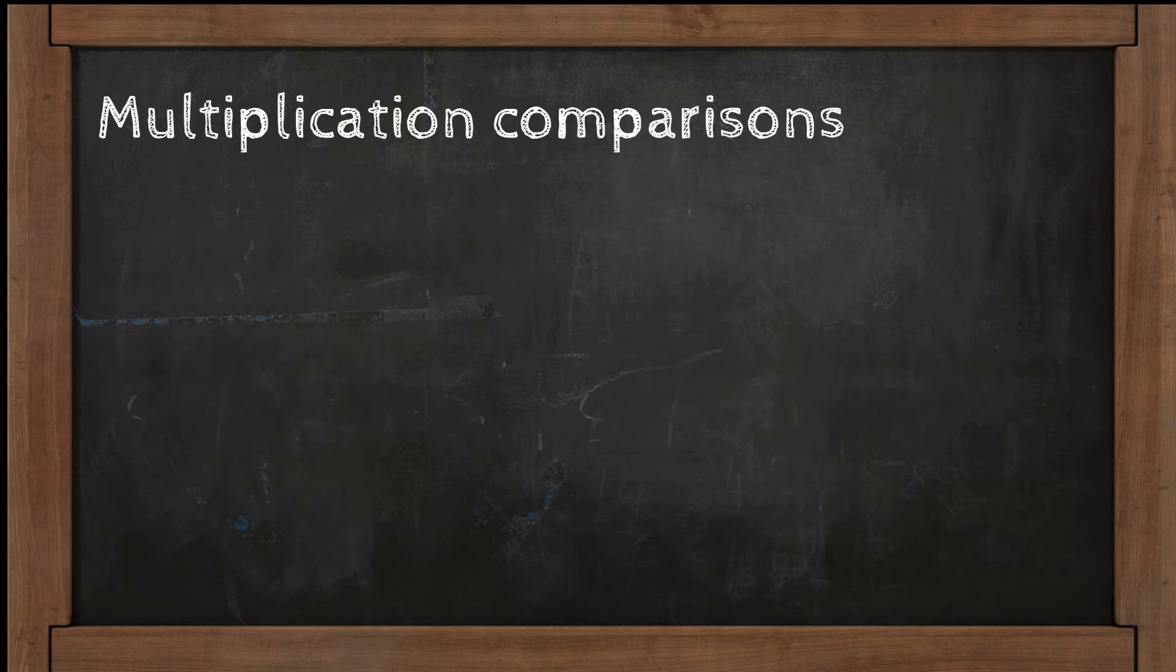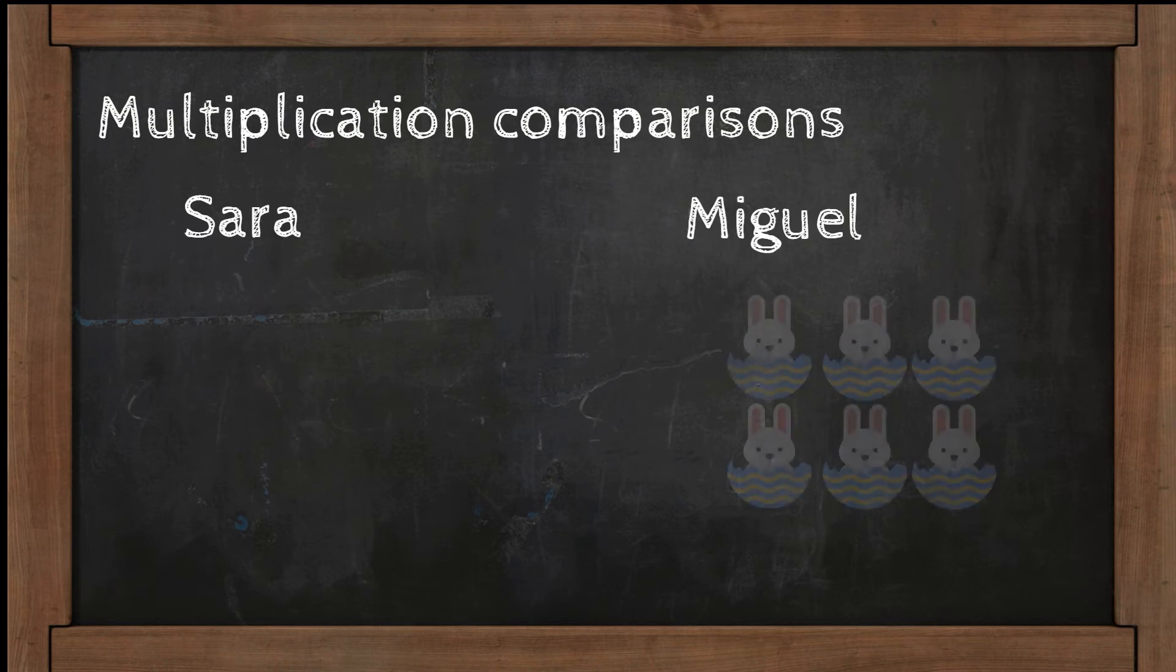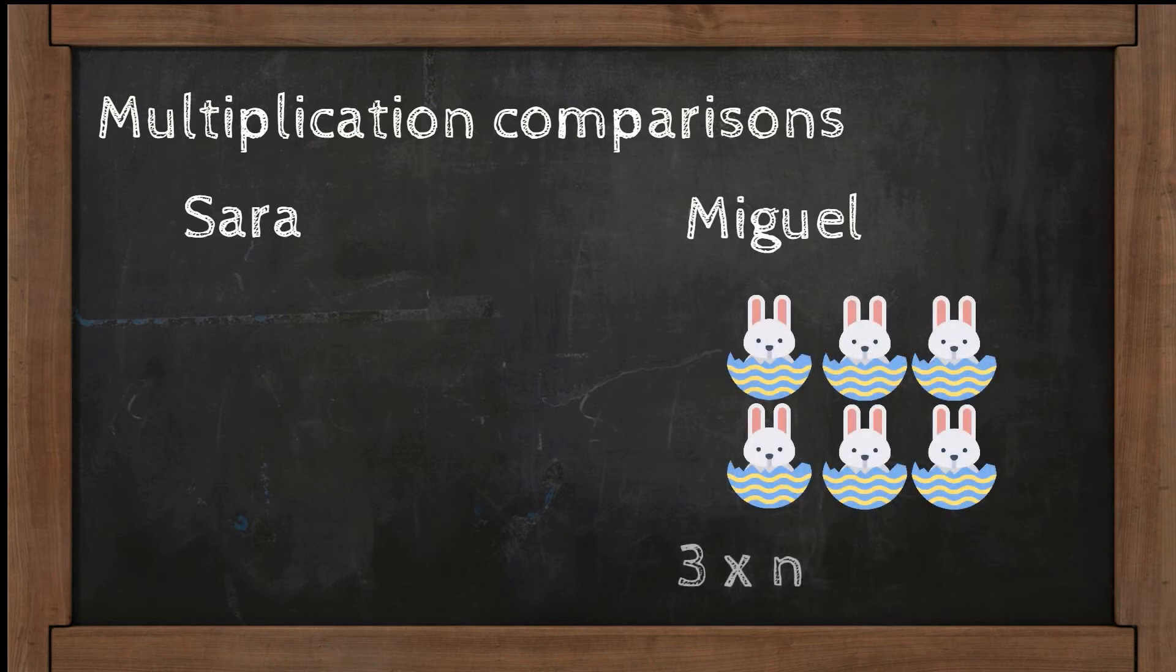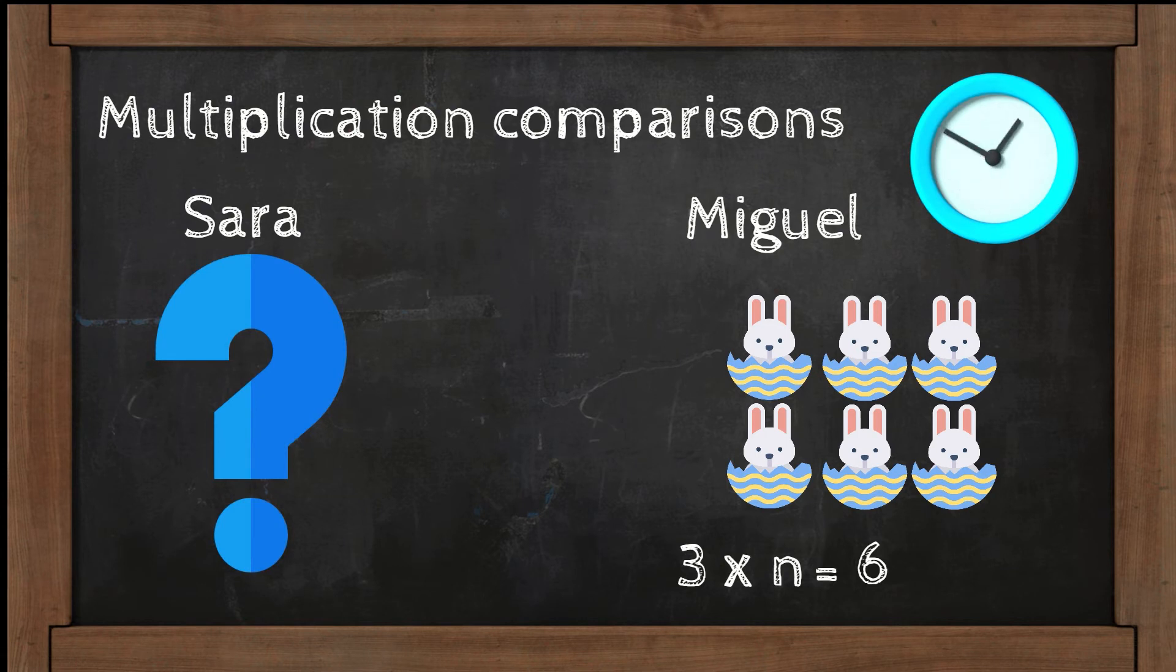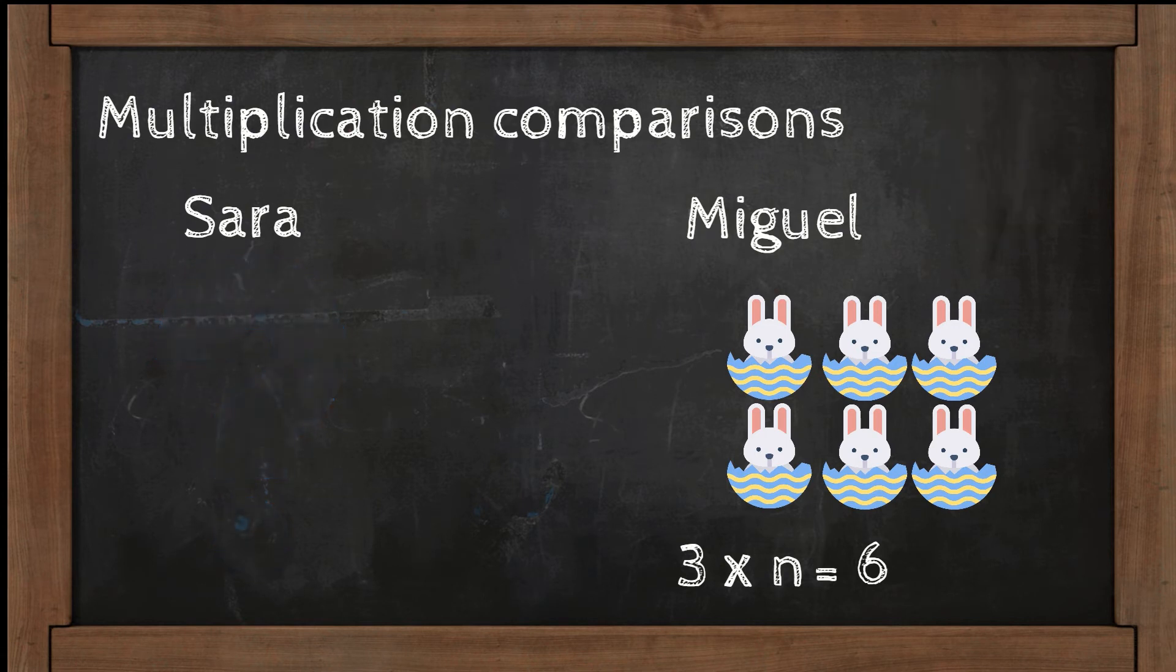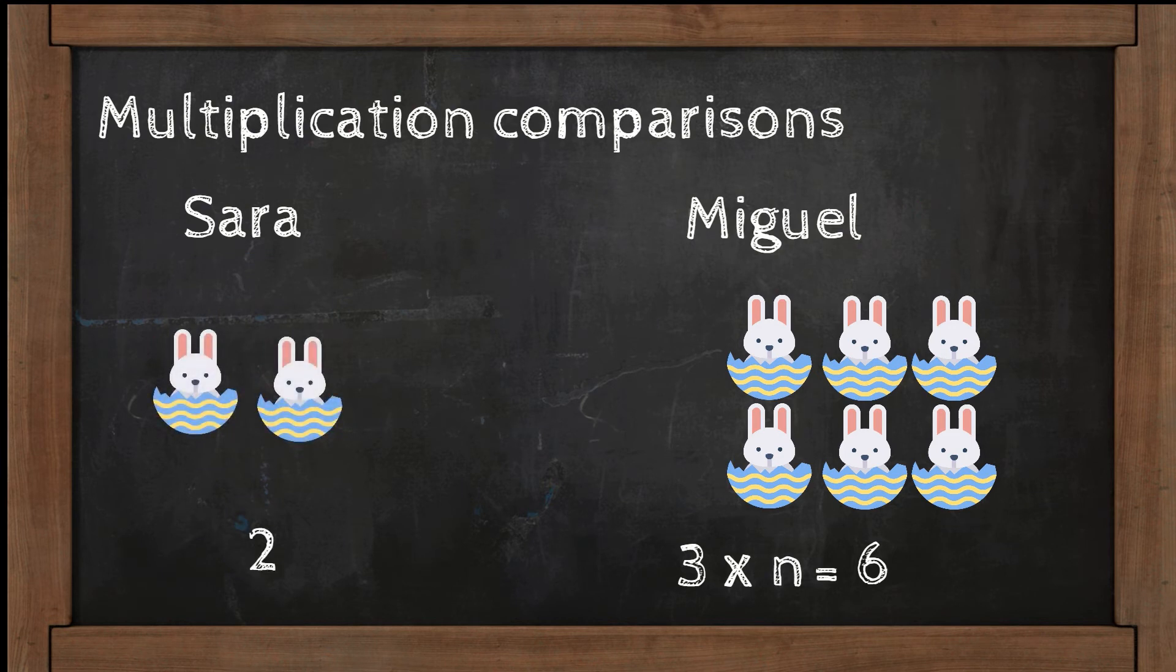Now let's take another example. Miguel has 3 times as many rabbits as Sarah. Miguel has 6 rabbits. How many rabbits does Sarah have? Great, 2 rabbits.